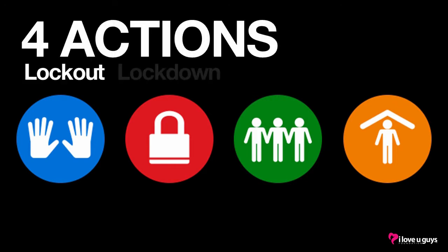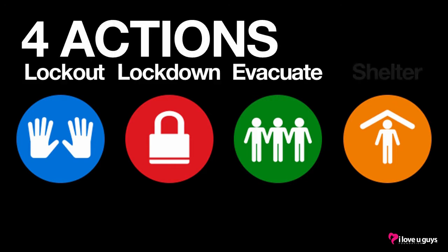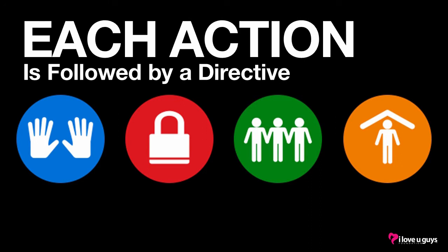Standard response protocol is based on four actions that we can take during a critical incident: Lockout, Lockdown, Evacuate, and Shelter. Each action is followed by a directive. There will be an announcement that follows specific language and direction when an SRP action is initiated.